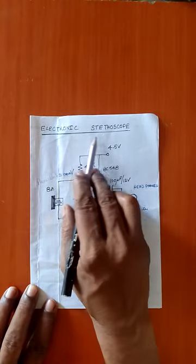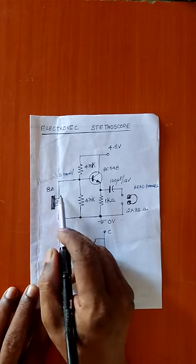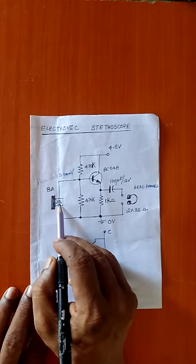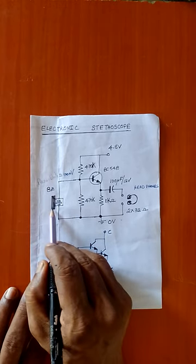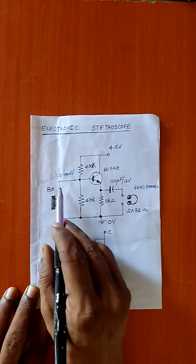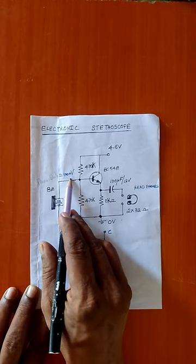The circuit shown here is an electronic stethoscope. Here we use a piezoelectric microphone. The heartbeat signals, sound signals are converted into electrical signals which is approximately 100 millivolt.